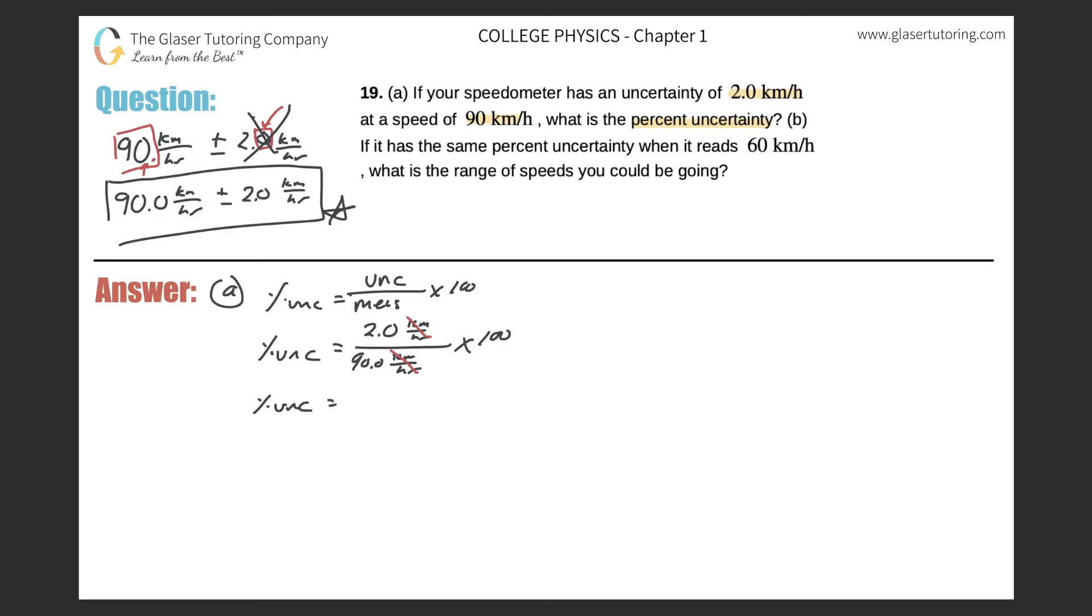Now all we have to do here is just plug this into the calculator. 2.0 divided by 90 multiplied by 100 works out to a value of 2.222 percent. Now the answer should have no more significant figures than the value with least, and the numerator had two significant figures whereas the denominator had three, so my answer cannot have more than two significant figures. So now all I need to do is just round this slightly, so the percent uncertainty will be equal to 2.2 percent. That would be the answer to part A.